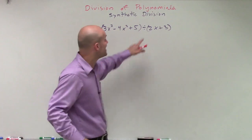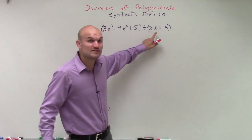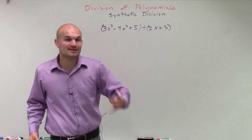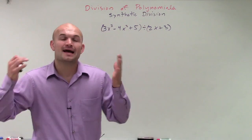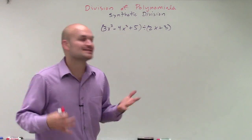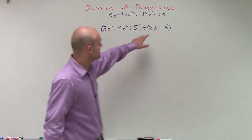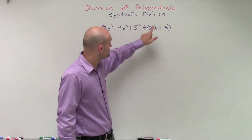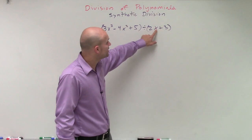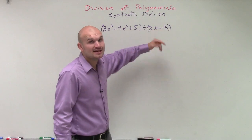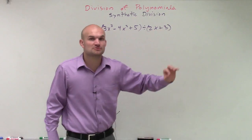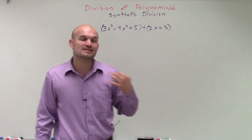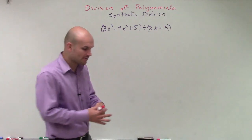We can have a coefficient for x. The only important thing is that it's a binomial and also that it's linear. This is a binomial — it has two terms — and the variable x is raised to the first power. So it satisfies all the requirements.